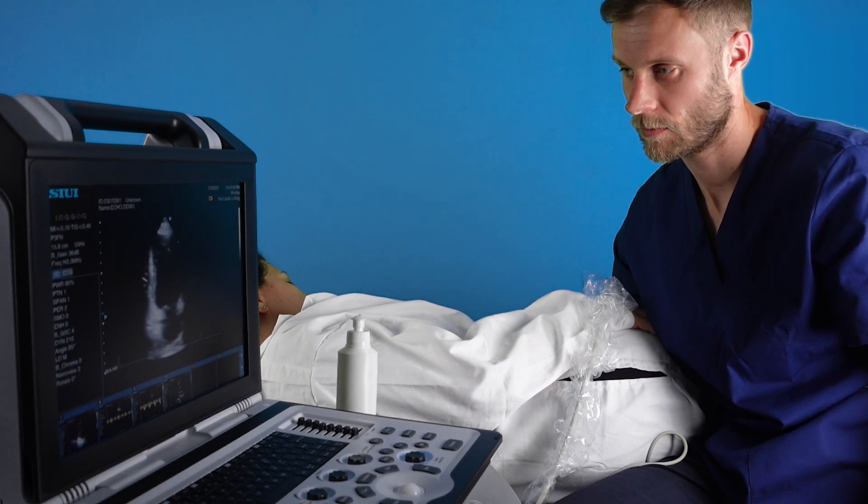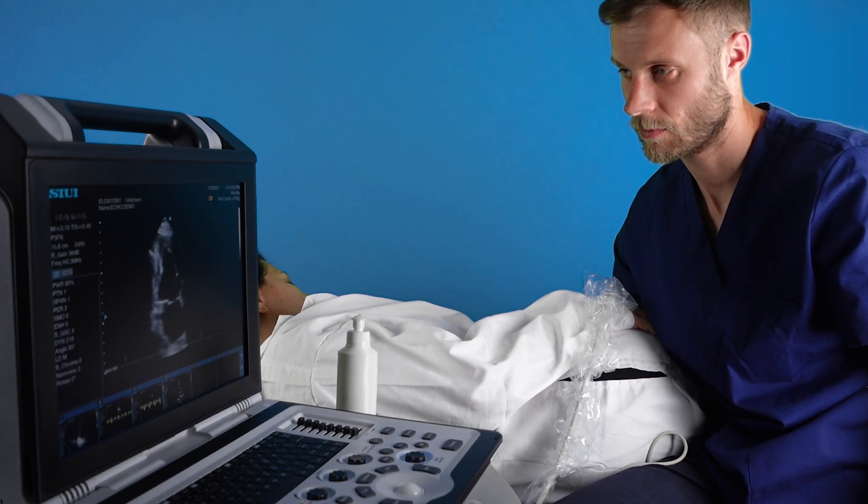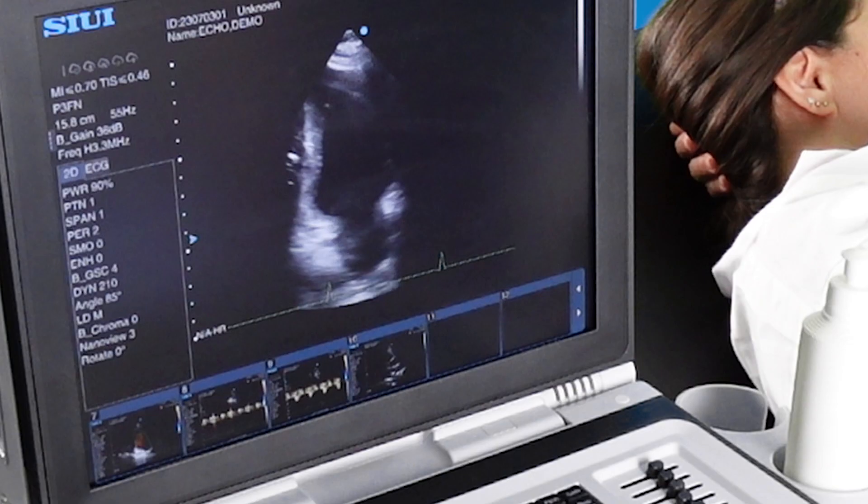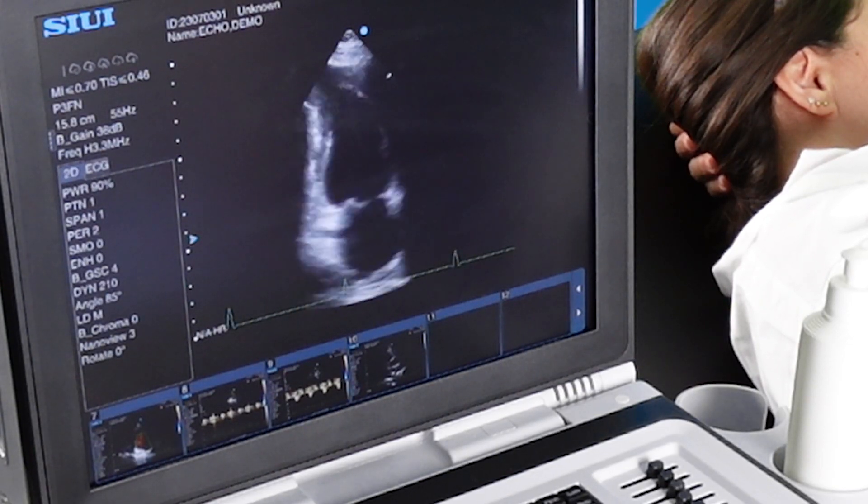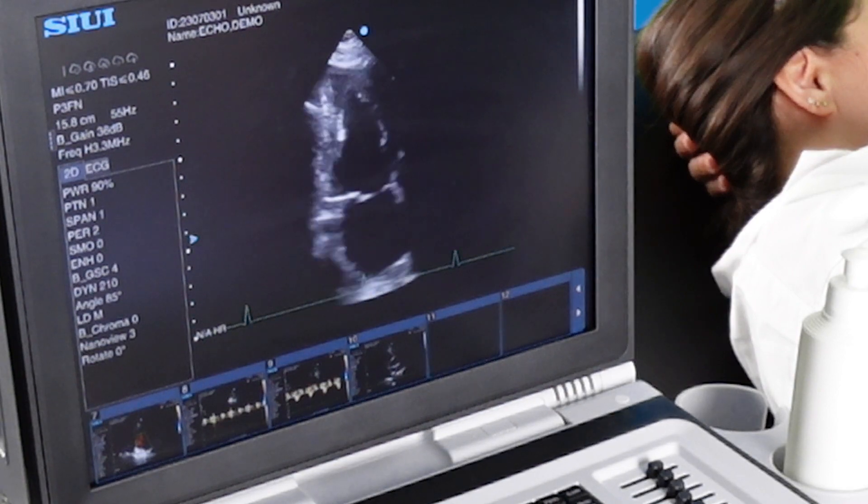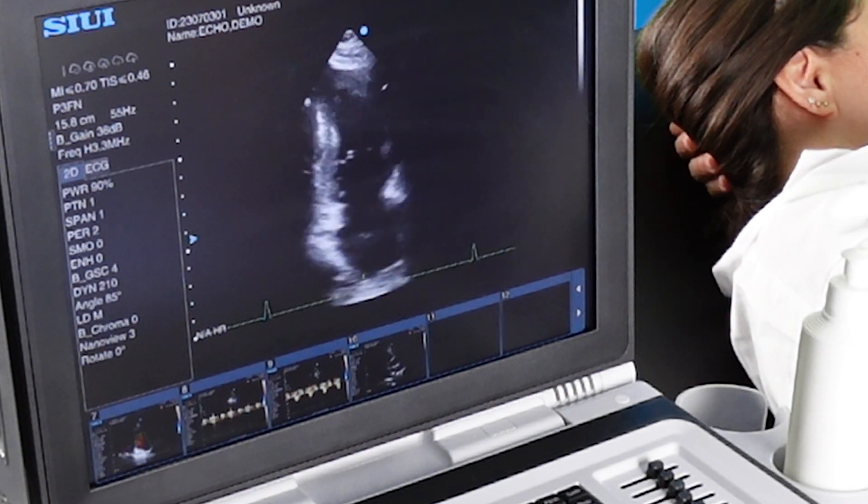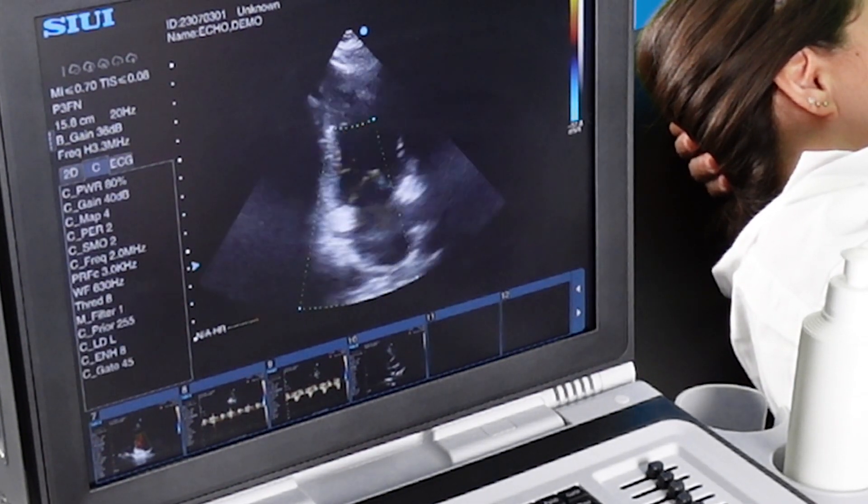Rotating your hand, you can get a two chamber view with the left ventricle and left atrium. You should put color Doppler over the valve in this view as well.